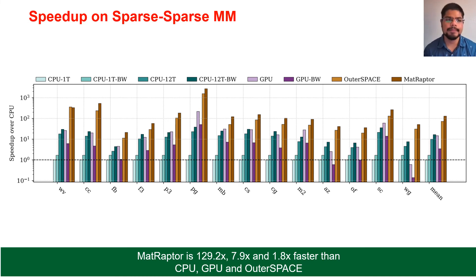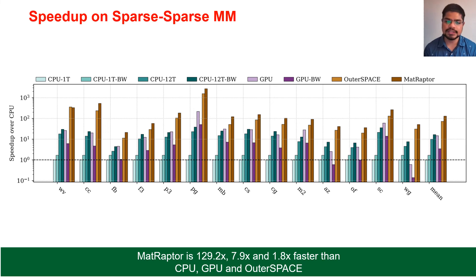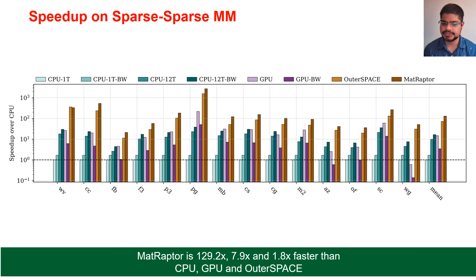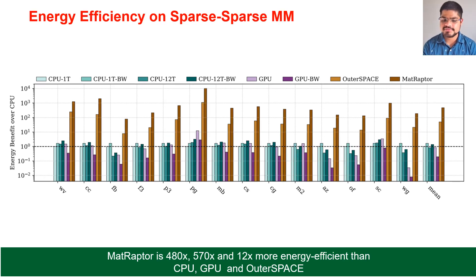Looking at performance results, we compare speed-up over a single-threaded CPU. CPU-1T is single-threaded CPU; CPU-1T-BW adds bandwidth normalization; CPU-12T and CPU-12T-BW are 12-thread variants. Then we have GPU, GPU-BW, OuterSPACE, and Matraptor. Matraptor outperforms CPU, GPU, and OuterSPACE on virtually all benchmarks, achieving overall 129.2x, 7.9x, and 1.8x speed-up over CPU, GPU, and OuterSPACE respectively, and 480x, 570x, and 12x energy efficiency over CPU, GPU, and OuterSPACE.